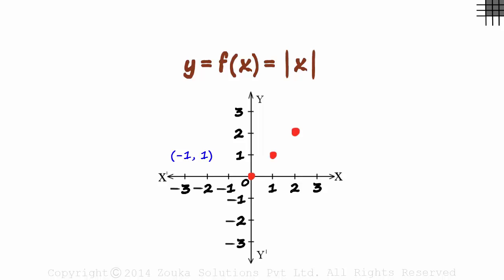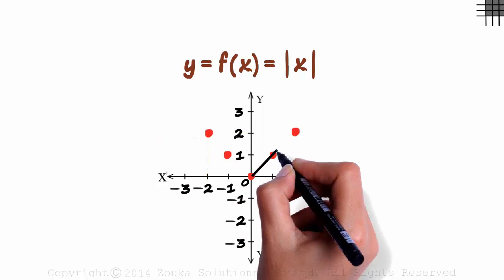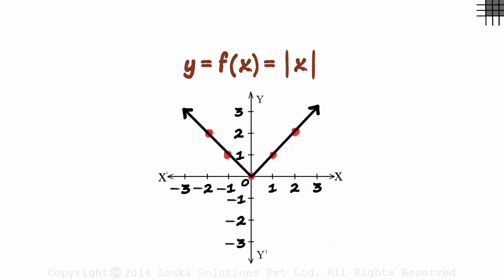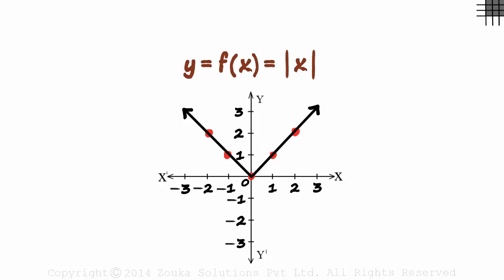Minus one comma one will be another point, and similarly minus two comma two will also be another point. The graph will look a bit like this — this is the graph of the absolute value of x. This graph also tells us that no matter what the value of x is, the absolute value will always be non-negative. It lies entirely in the non-negative region of y.